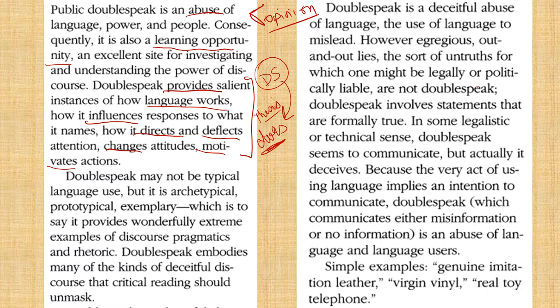Doublespeak may not be typical language use, but is archetypical, prototypical, exemplary — which is to say it provides wonderfully extreme examples of discourse, pragmatics, and rhetoric. Doublespeak embodies many of the kinds of deceitful discourse that critical reading should unmask. So here's another point the author is making: if you're a good critical reader, you should be able to see this deceit. It's saying that you don't use doublespeak all the time, but when you do see it, you should be able to understand that what you are reading is doublespeak.